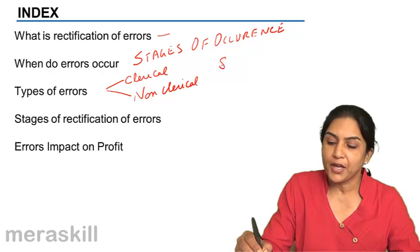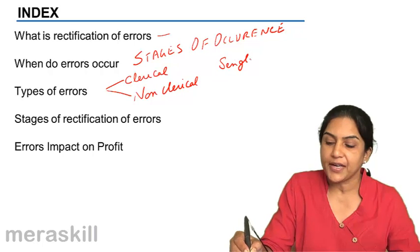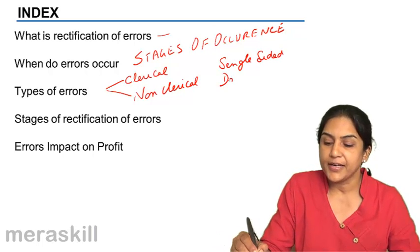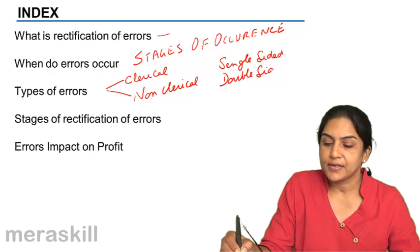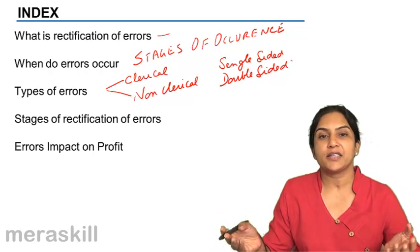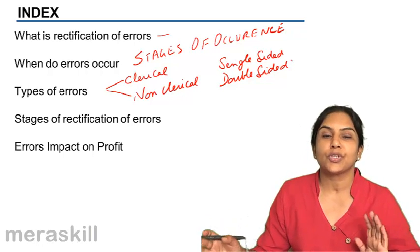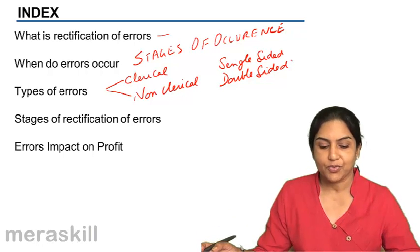Errors may also be divided as single-sided errors and double-sided errors. Double-sided errors, the trial balance will still tally. Single-sided errors will throw the trial balance out of balance. It will not tally.